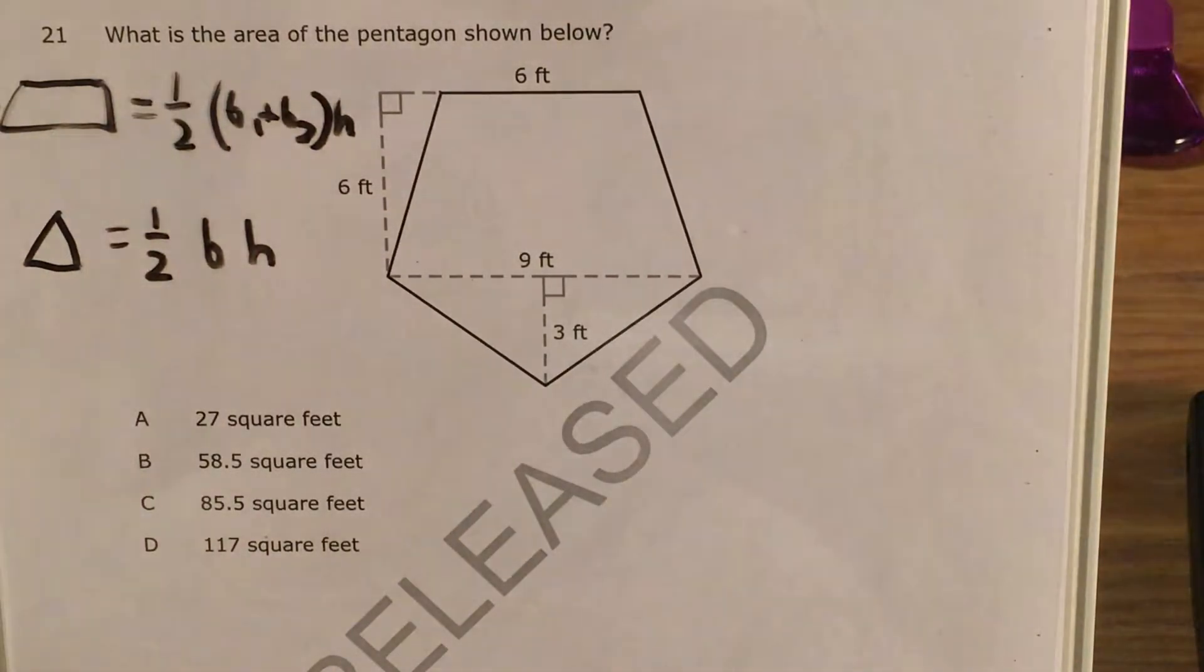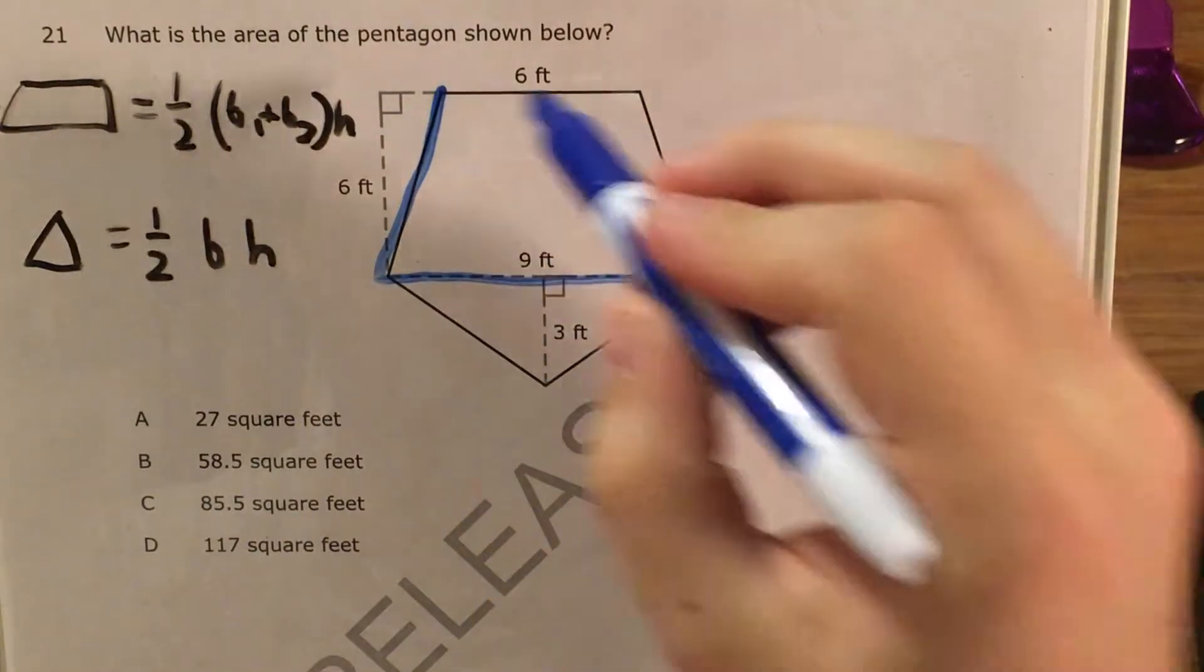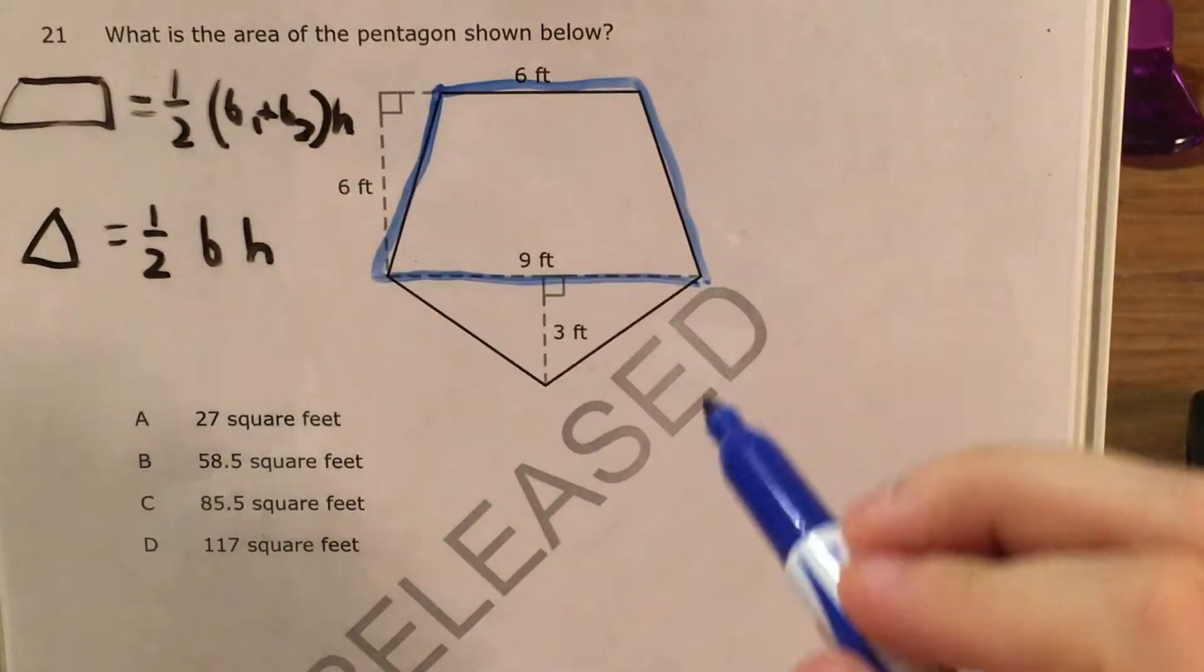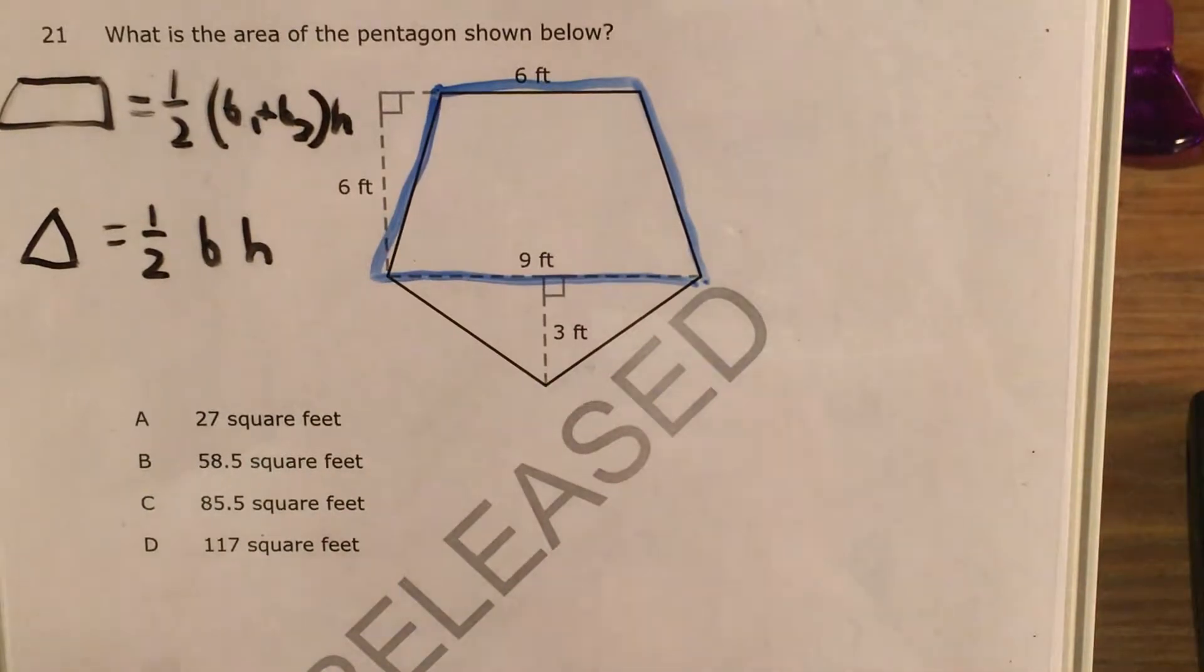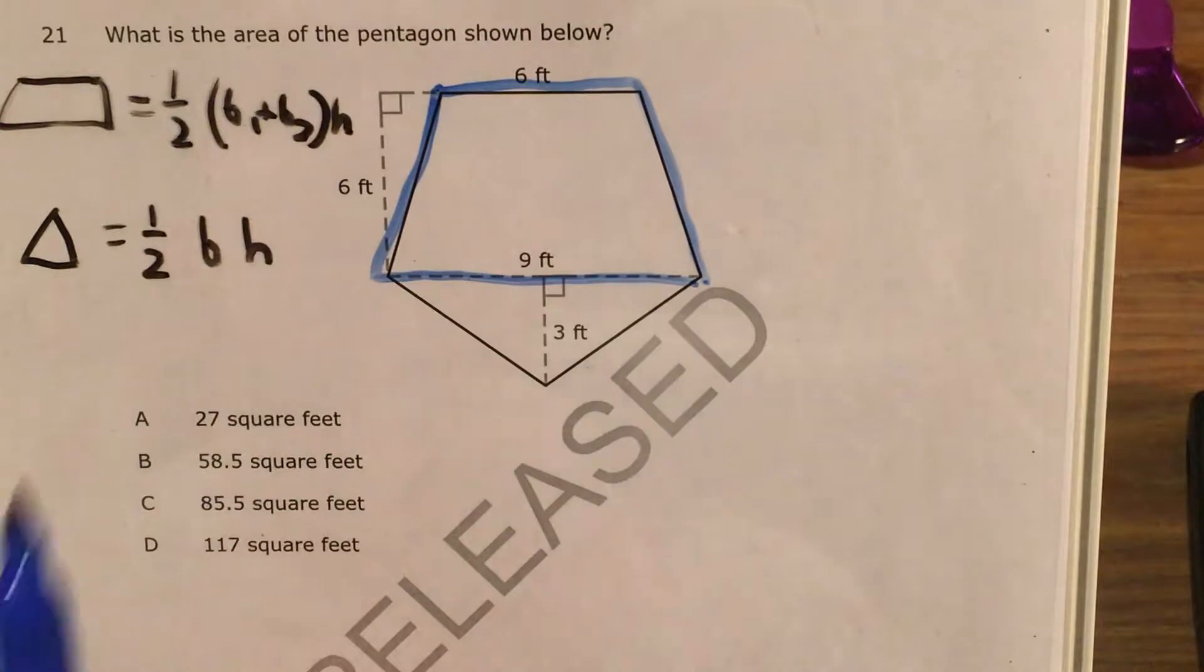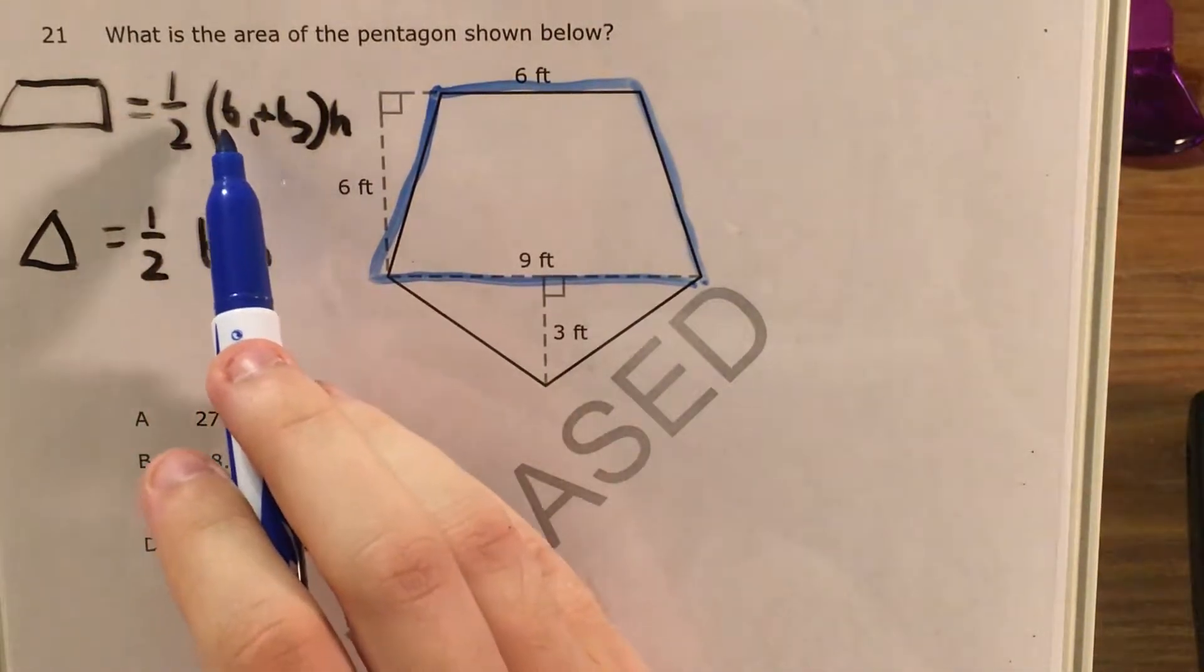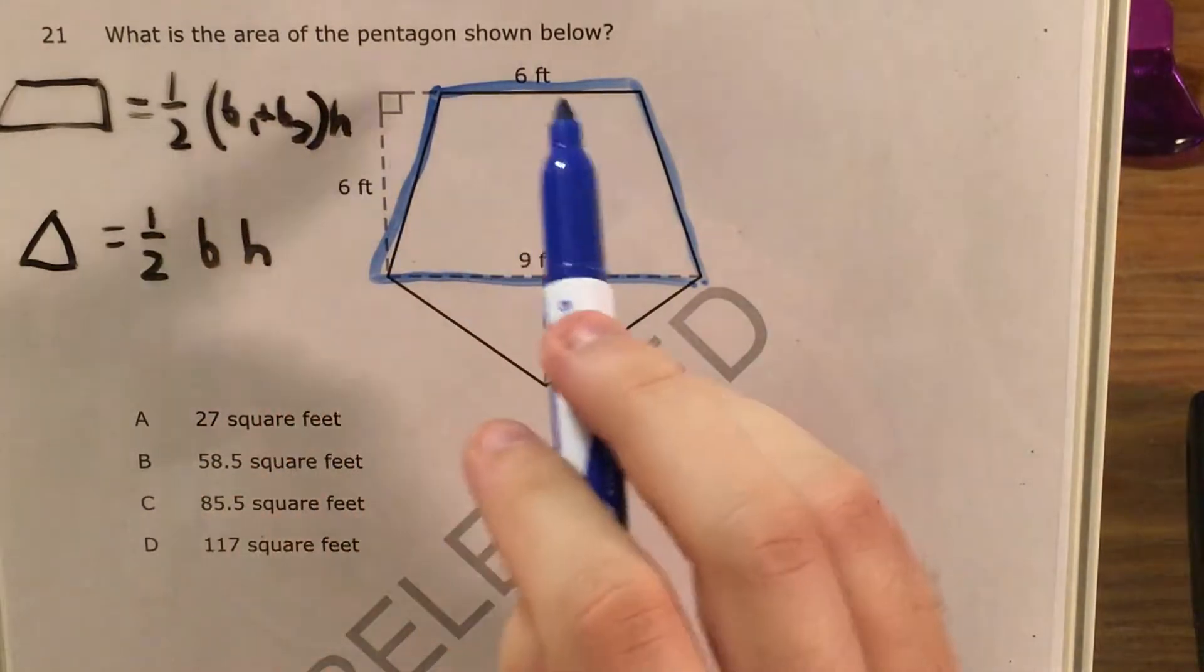So let's get started. I'm going to focus first on the harder shape here, which is the trapezoid. Now the formula for the area of a trapezoid I went ahead and wrote up here, essentially it's one-half times our first base plus our second base.